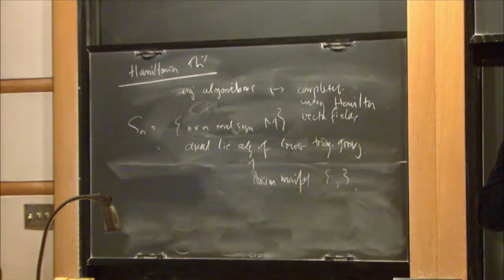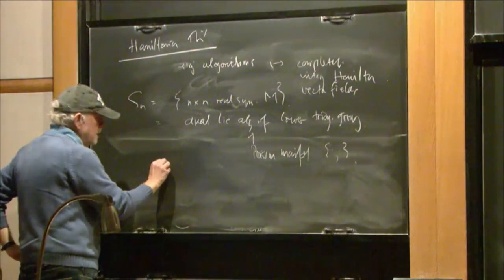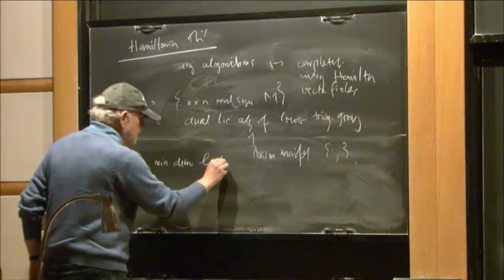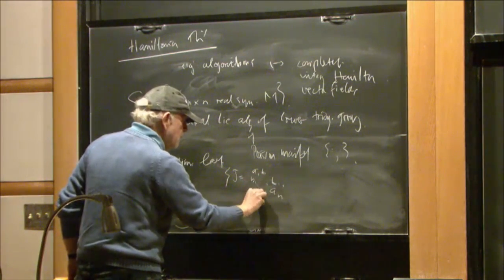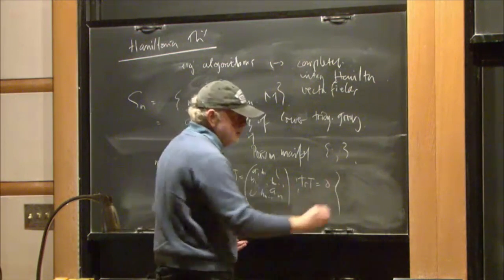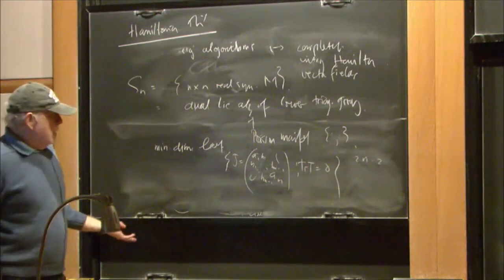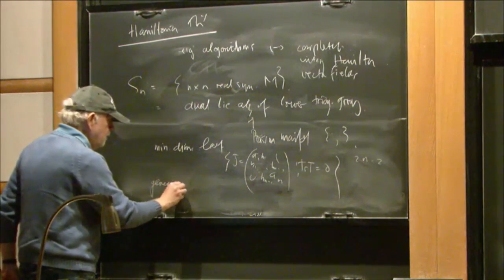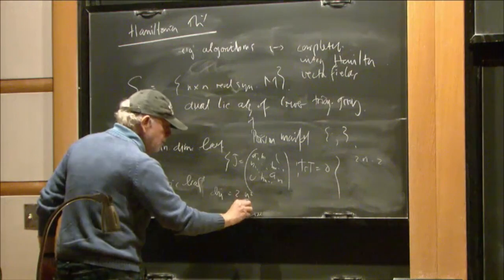It's not a smooth foliation but it can be foliated. So, that means you can, if you start on one of those leaves, you stay on those leaves and your flow will have a Hamiltonian character. So, the minimal dimensional leaf is just the Jacobi matrices. J equals A1, AN, B1, BN minus 1, with the trace of J is 0. So, this is a 2N minus 2 dimensional symplectic manifold. So, you restrict your Poisson manifold to these. The generic or generic leaf consists of full matrices and the dimension is 2 times N squared over 4.